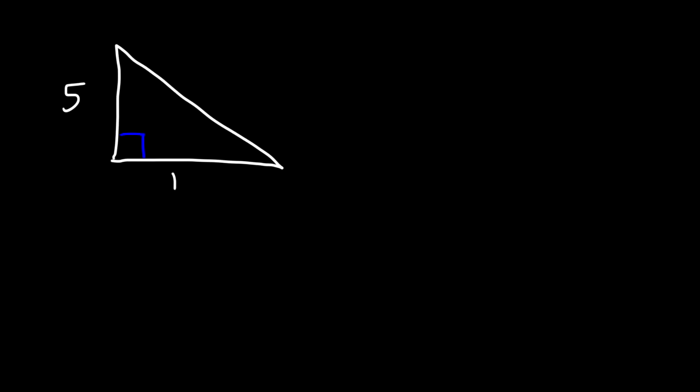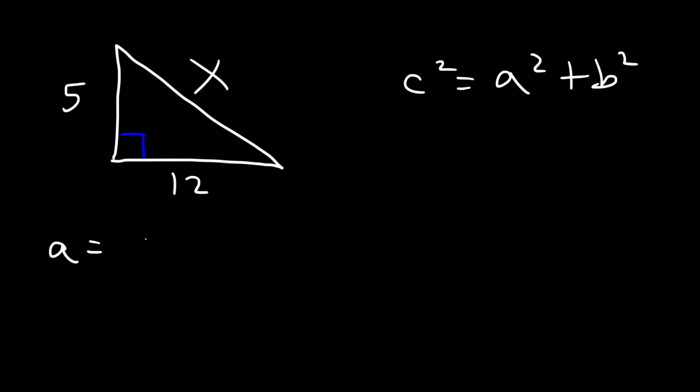So let's say if we have a triangle that looks like this. Let's say this side is 5 and this is 12. Calculate the value of x. Now if you want to try it, feel free to pause the video. So let's use the formula c squared is equal to a squared plus b squared. a can be 5 or 12 — it doesn't matter. Let's say we choose a to be 12 and b is 5. The hypotenuse c is across the box, which is x.